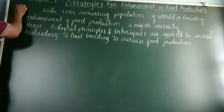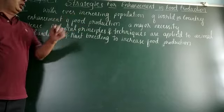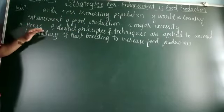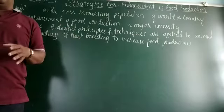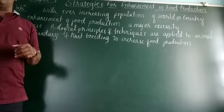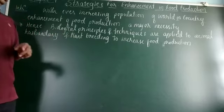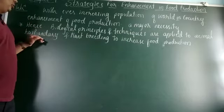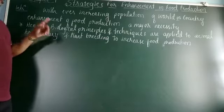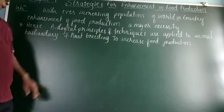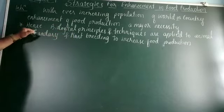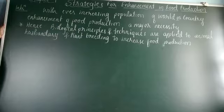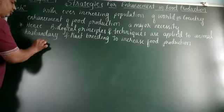Introduction point: with ever-increasing population, enhancement of food production is a major necessity. Hence, biological principles and techniques are applied to animal husbandry and plant breeding. The food we get comes either from animals or from plants — we are not chemotrophs or saprotrophs. Because of that, we depend on animals and plants for food, so we need development in animal husbandry and plant breeding.